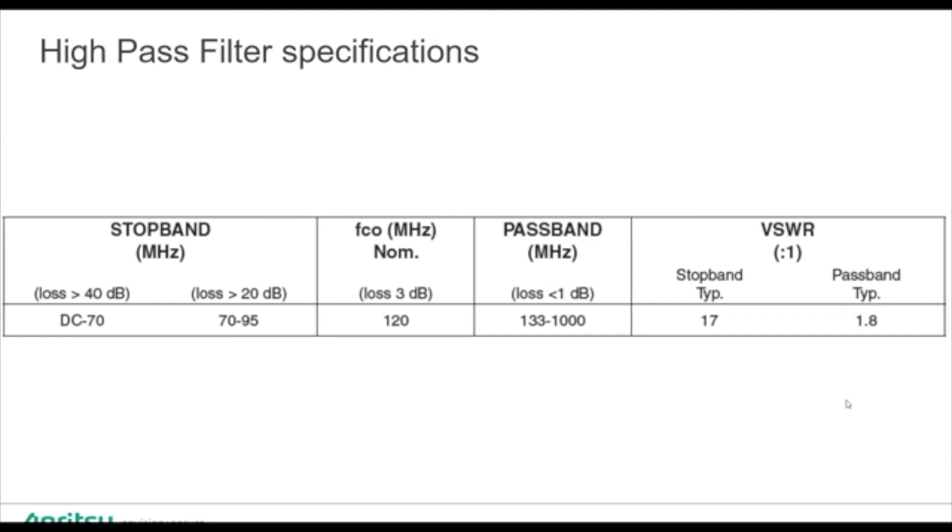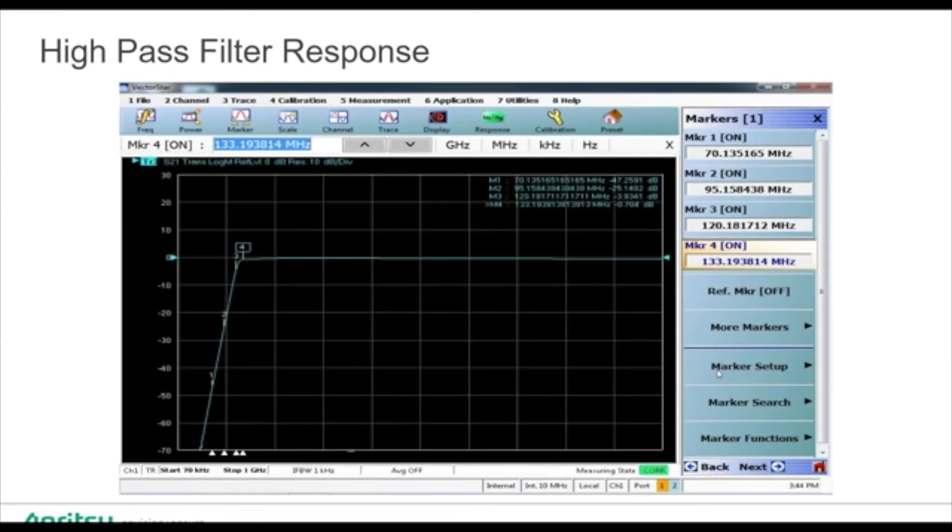For this high-pass filter, we can see it's going to give us loss from DC to 70 megahertz. In that 70 to 95 megahertz, we'll have a loss of approximately 20 dB. Our frequency cutoff 3 dB point is 120 megahertz, and our pass band is 133 to 1 gigahertz. We have VSWR specifications as well for the stop band and the pass band. If we look at this filter, you'll see the performance is very good. We are blocking our low frequency, and the location of each marker is in relation to the specifications we just discussed. All of those are well within tolerance.